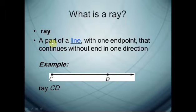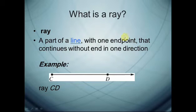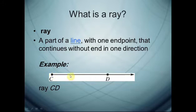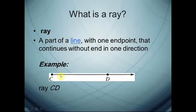What is the ray? The ray is a part of a line with one end point that continues without end in one direction. For example, ray CD. The starting point is point C and its direction is toward point D. And because the ray has no end, we can't measure its length.